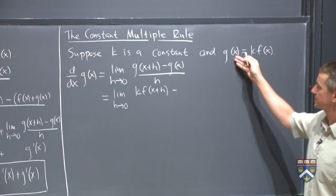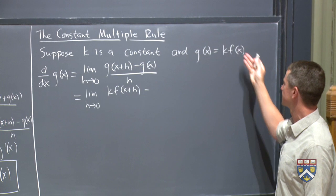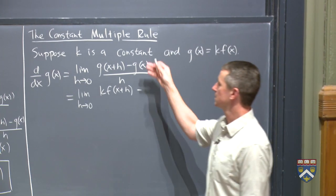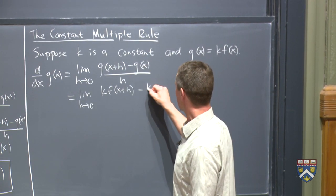Because whatever I put in for this x, if I replace it by x plus h, I replace that by x plus h. G of x is just k, f of x.